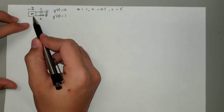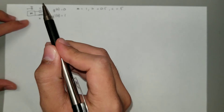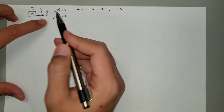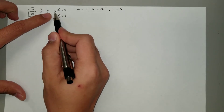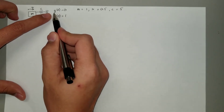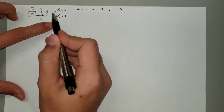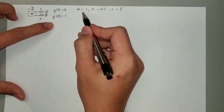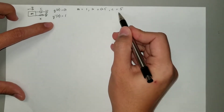What we have right here is the diagram of the system and the boundary conditions. At time t equals zero, the displacement of the system is zero and the velocity of the system equals one. We're also given the mass, the spring constant, and the damping constant.